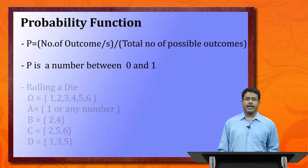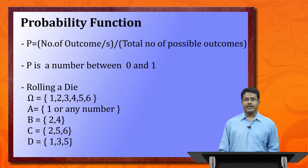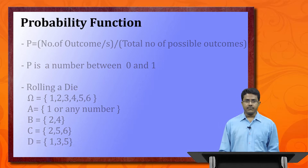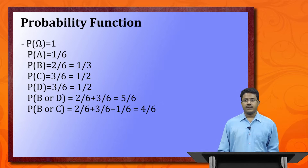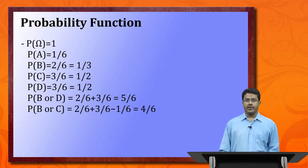Rolling a die: the sample space is {1, 2, 3, 4, 5, 6}. We define events A, B, C, and D. Event A is any single number; event B is {2, 4}; event C is {2, 5, 6}; and event D is {1, 3, 5}. The probability of all events together is naturally 1. P(A) = 1/6, P(B) = 2/6. Similarly we can calculate P(C) and P(D).